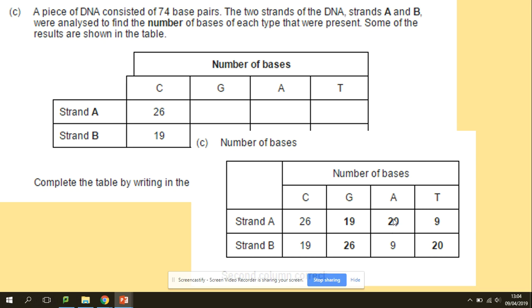Adenine, we've got 20 on strand A, binds with strand B and binds with thymine. Hence, we've got 20 for thymine. Same approach for 9 for adenine and thymine.